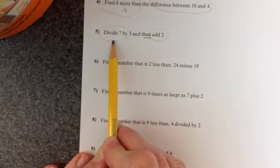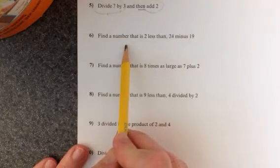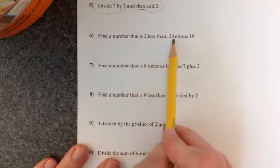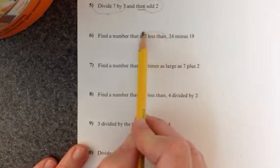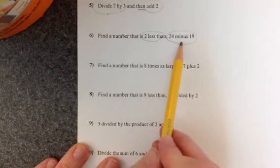And that's one reason why we use parentheses to tell us what to do first. Find a number that is 2 less than 24 minus 19. We'll need to do 2 less and 24 minus 19.